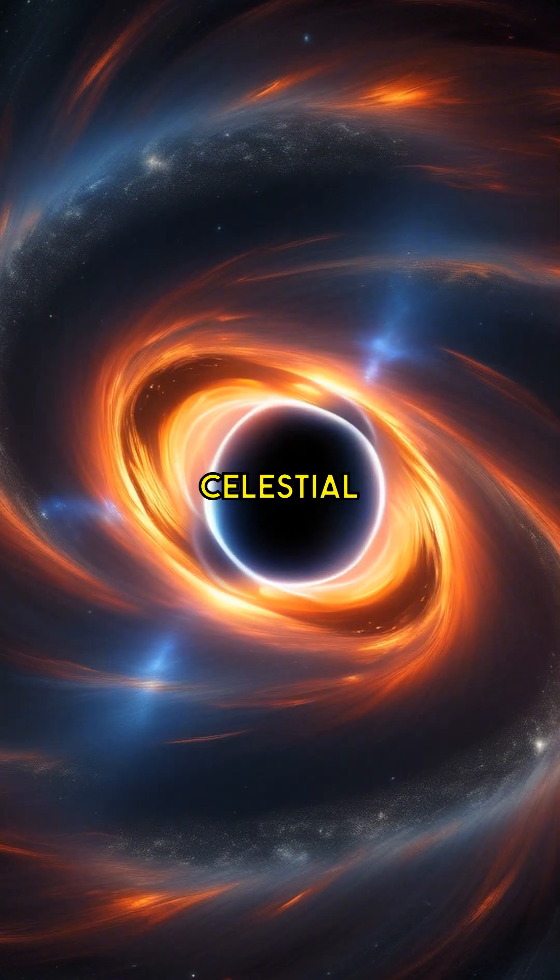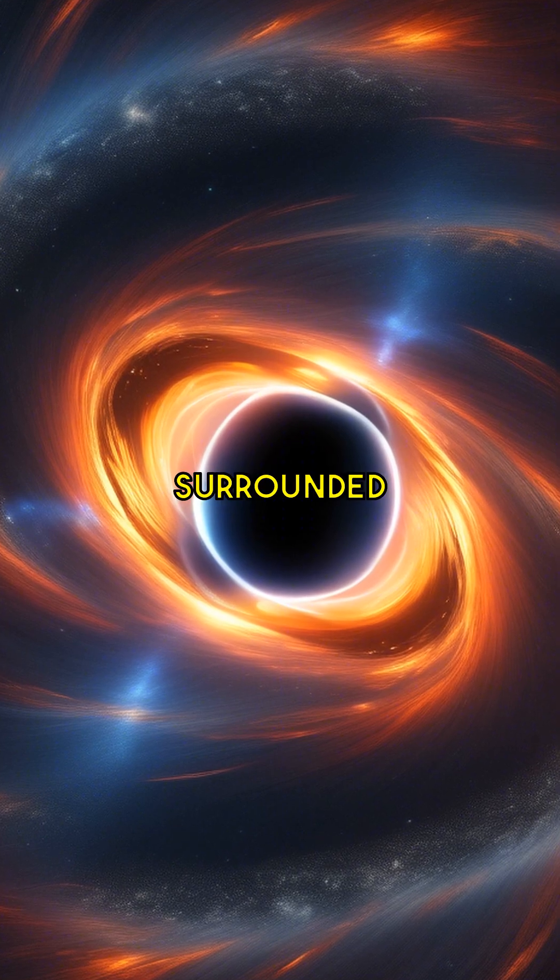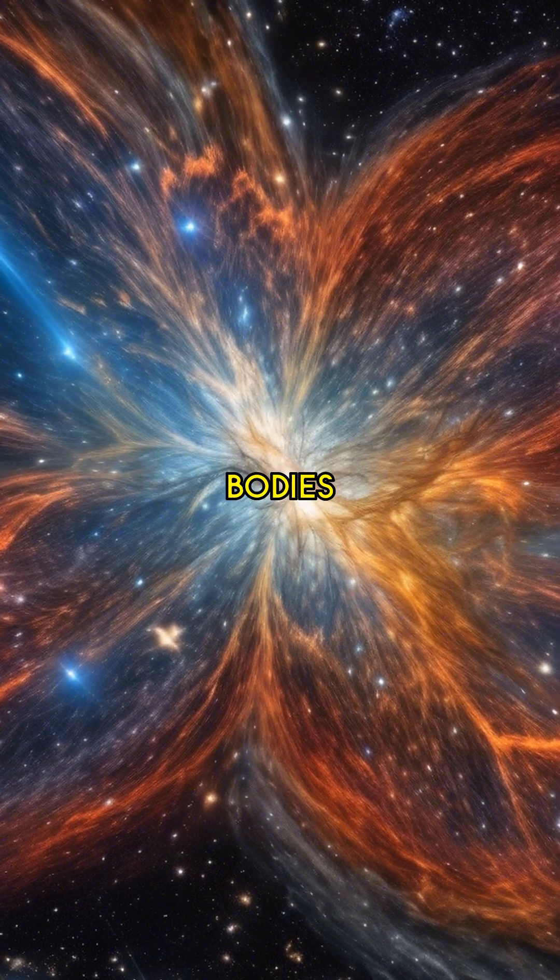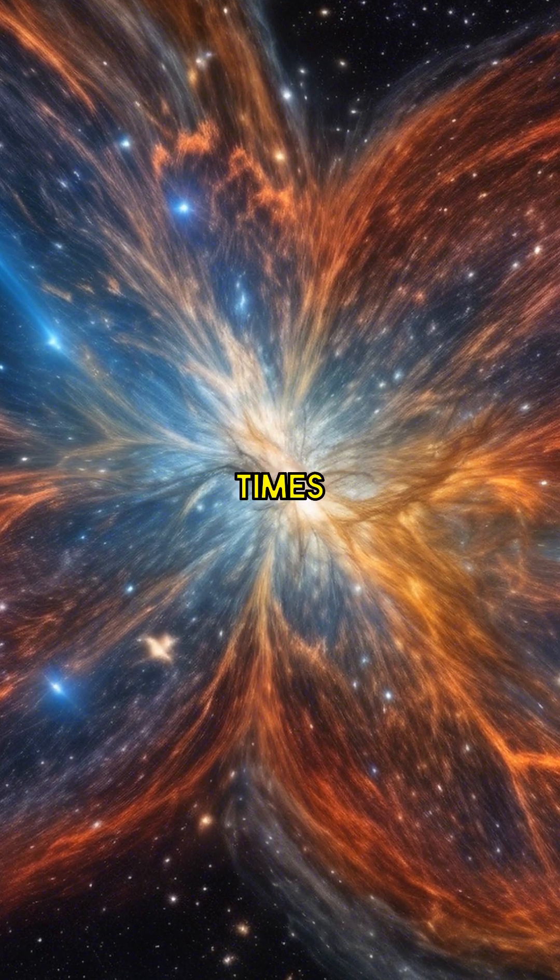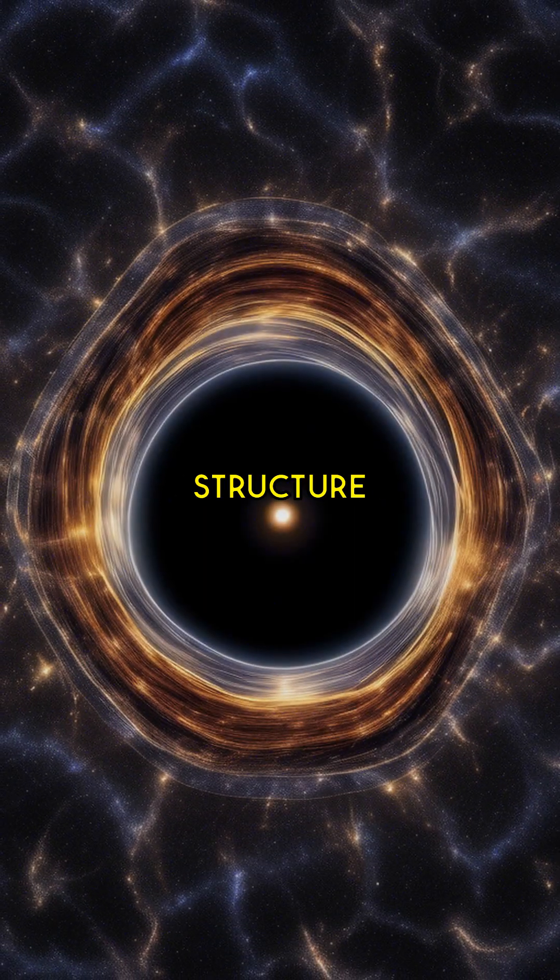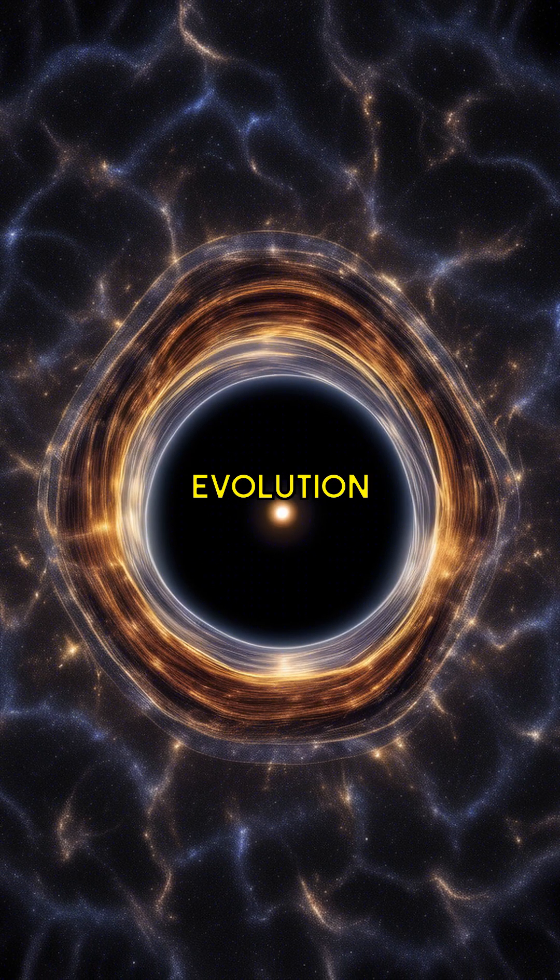Quasistars are intriguing celestial objects that may have a black hole at their core, surrounded by an enormous envelope of gas. These massive bodies can be up to 100,000 times more massive than our sun, showcasing a unique structure that challenges conventional stellar evolution theories.